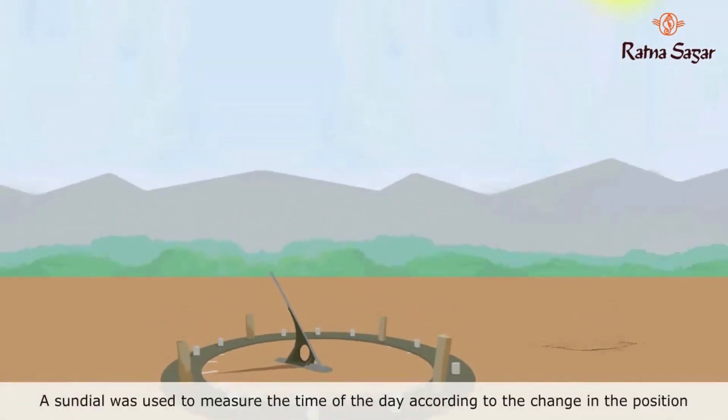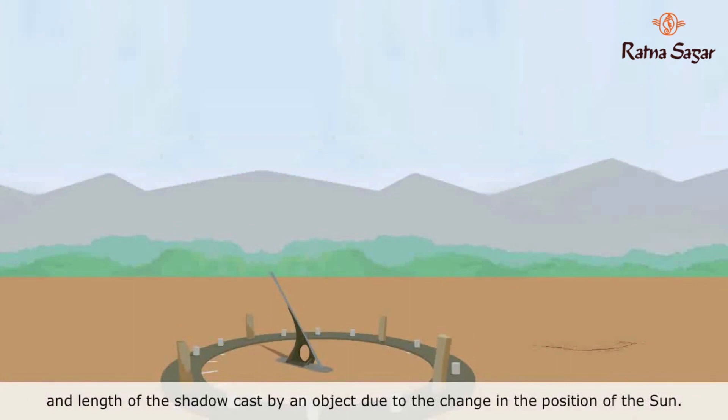A sundial was used to measure the time of the day according to the change in the position and length of the shadow cast by an object due to the change in the position of the sun.